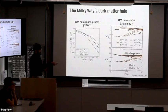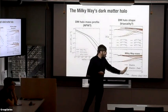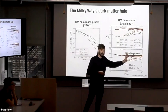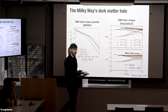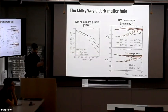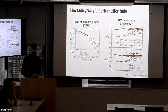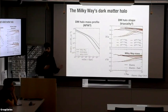Is the density profile NFW? Are the outskirts — beyond about a tenth of the virial radius — triaxial, or more spherical? These are kind of second-order predictions from simulations, but they're things we can actually check in the Milky Way, so we should do that.